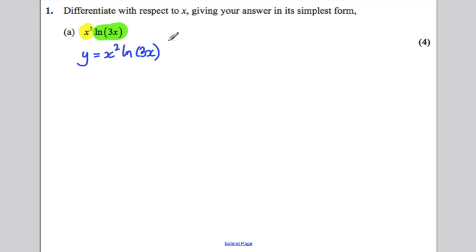Then I'm going to use the product rule. So I'm going to let my u be x squared and I'm going to let my v be ln of 3x. Now u dash is simple, it's 2x.